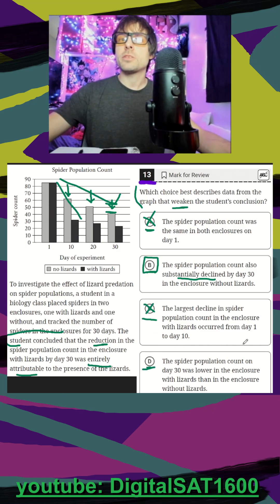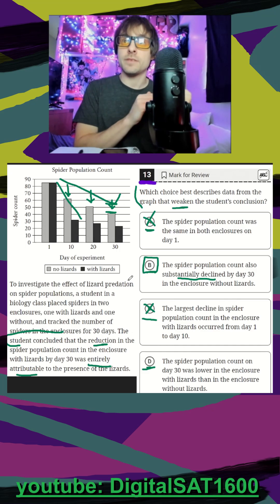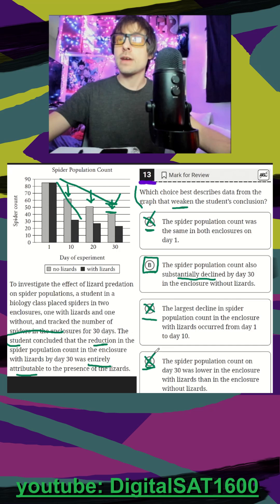Same thing with D, the spider population count on day 30 in the enclosure with lizards was lower than the one without lizards. It is also true according to our graph, but we're trying to prove the opposite. We're trying to defend that they are also losing a lot of spiders in the ones without lizards. So C and D are correct according to our graph, but not going along with us weakening the student's conclusion. It's going to be B here.